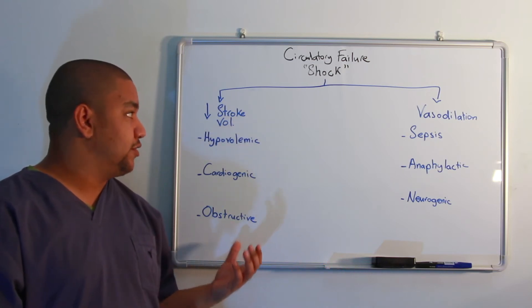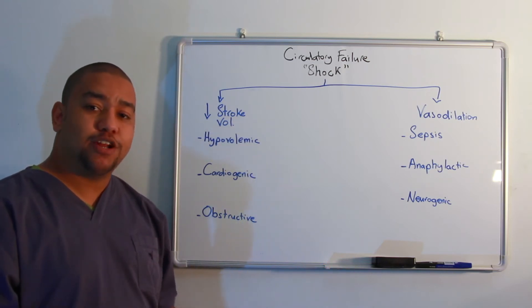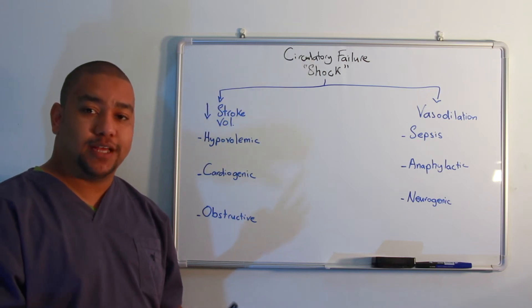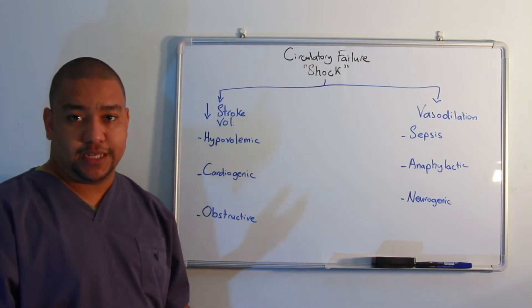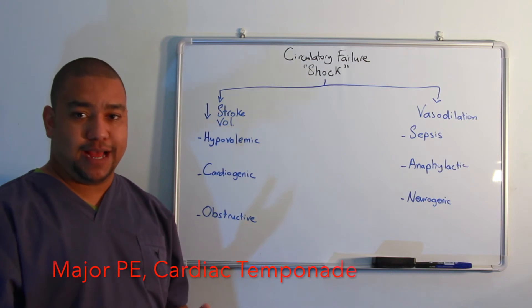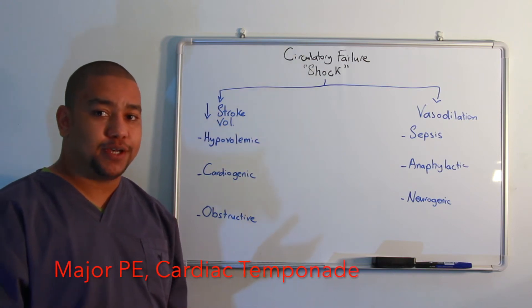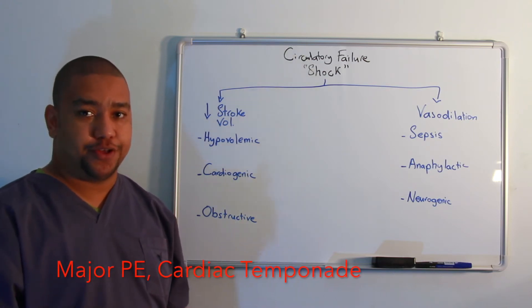Obstructive shock is when there is an obstruction to the blood flow itself, such as in major pulmonary embolism, cardiac tamponade, or tension pneumothorax.